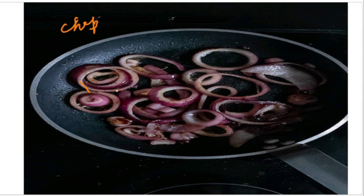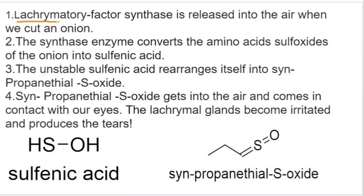Due to this damaged skin, an enzyme called lachrymatory factor synthase is released into the air when we cut the onions. Due to these enzymes, the amino acid sulfoxides — compounds already present in the onion — are converted.